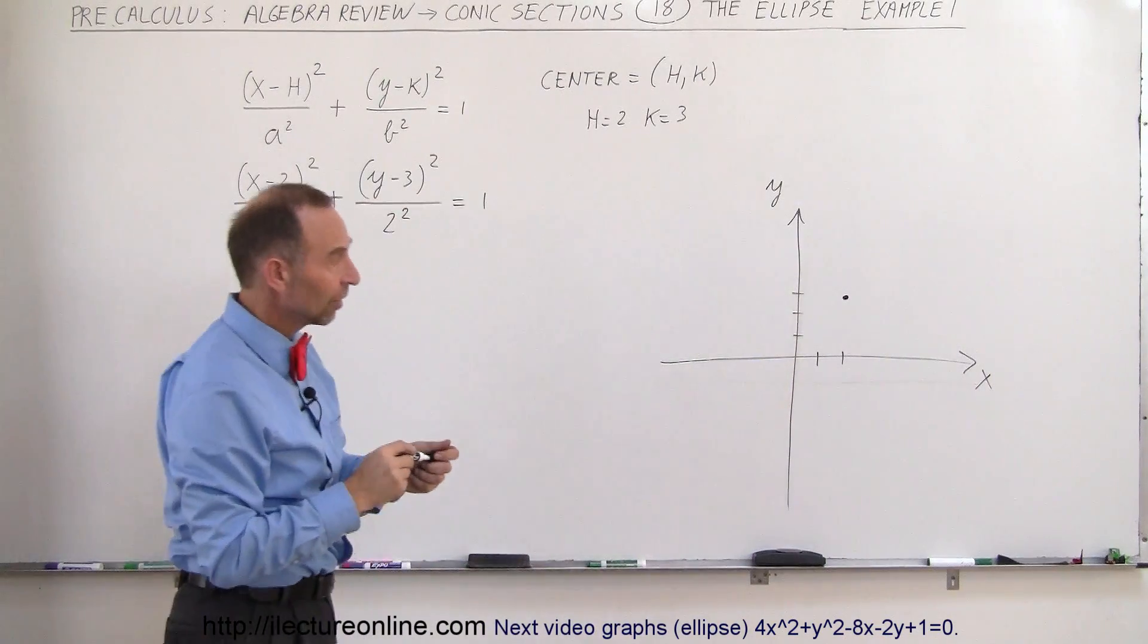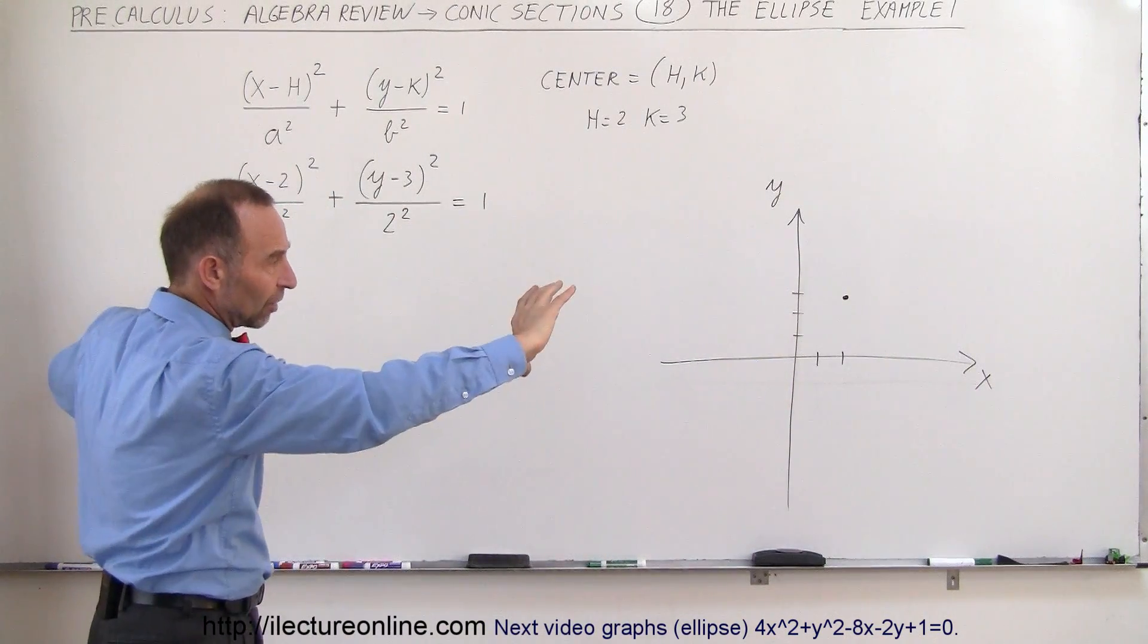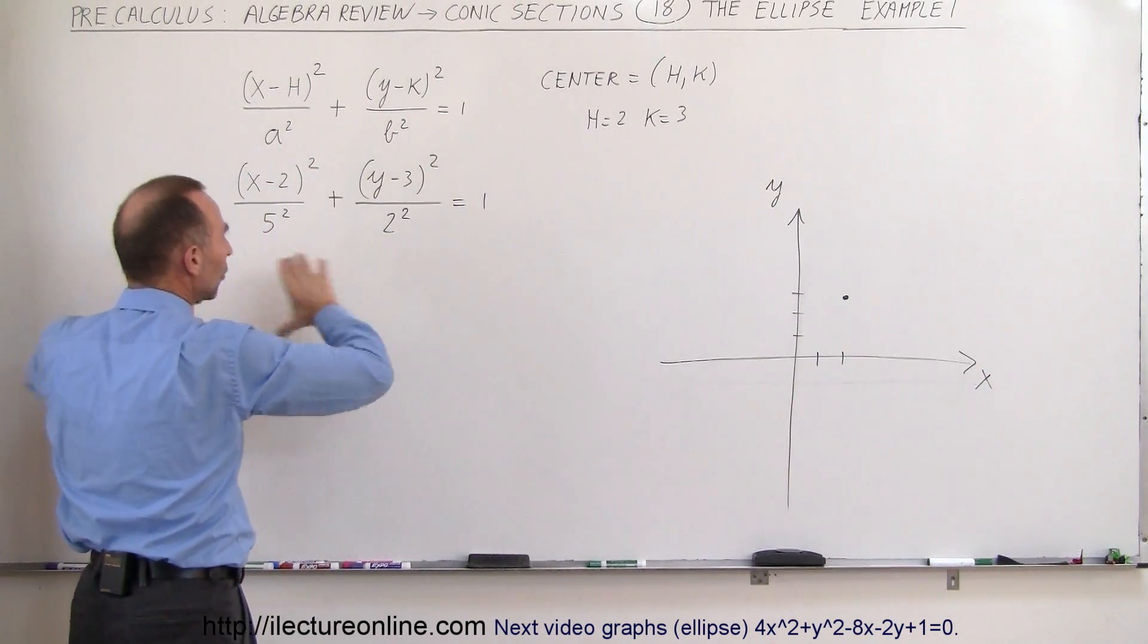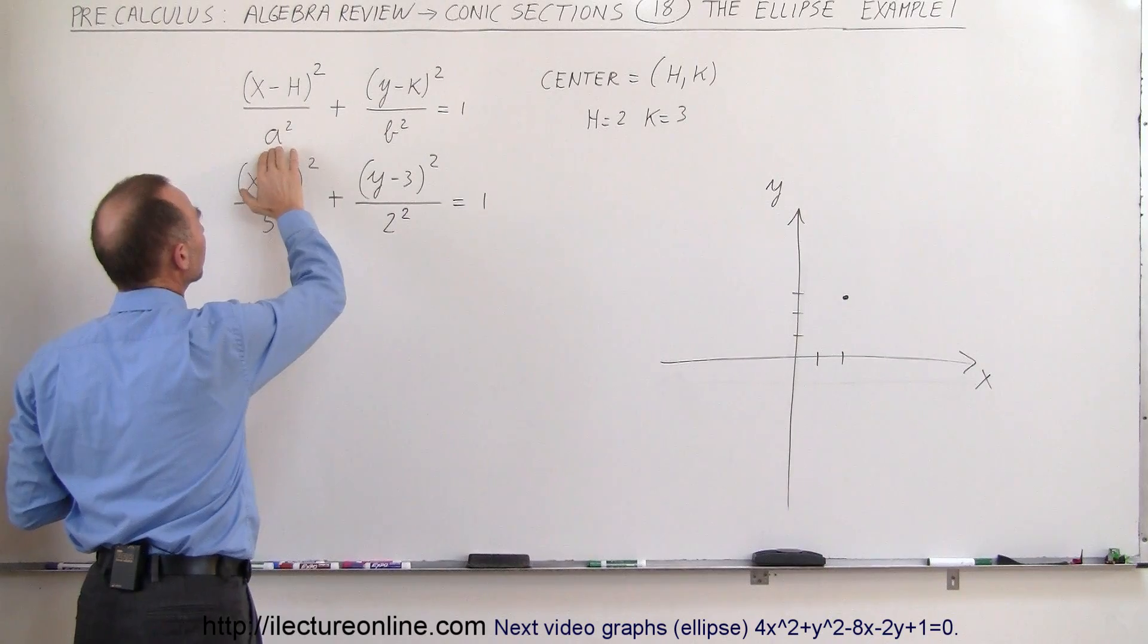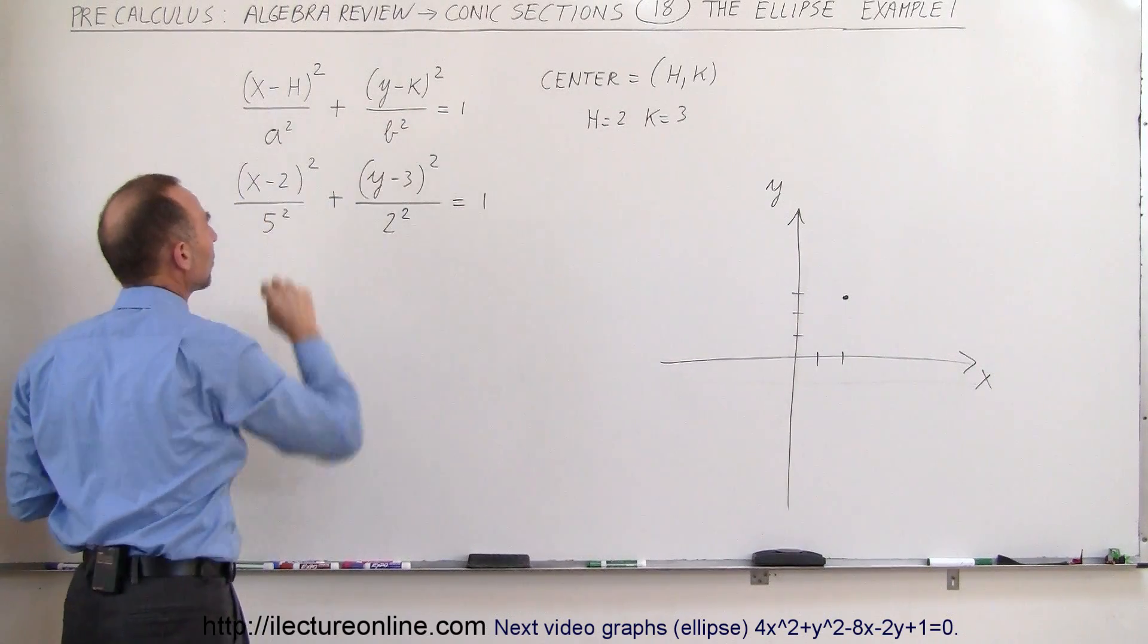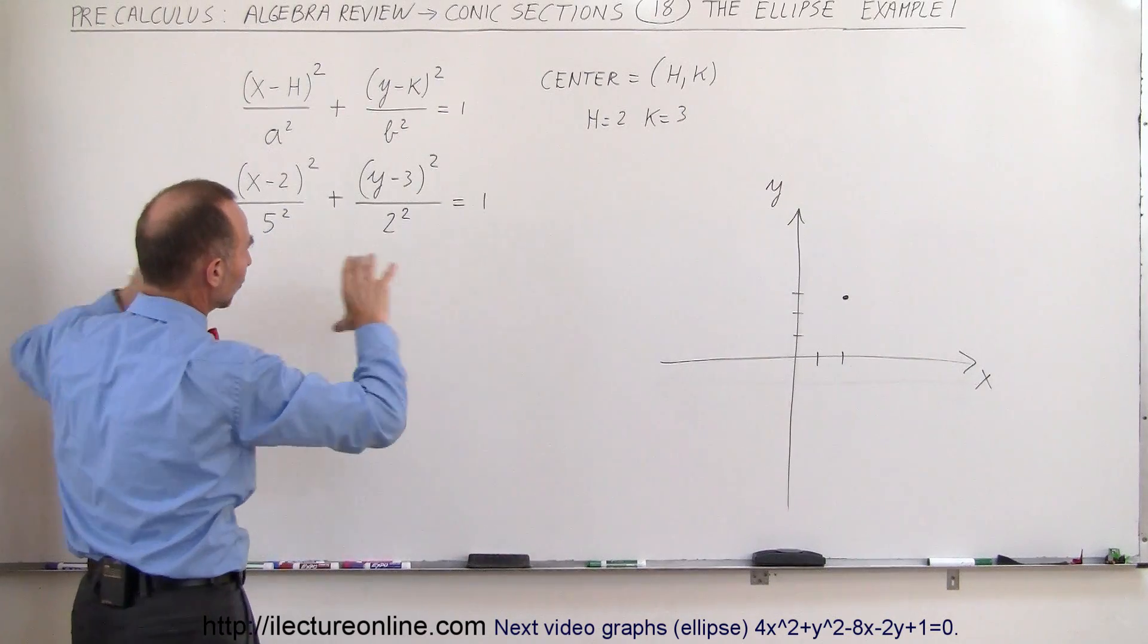Now, will the ellipse be stretched this way or stretched vertically? Well, that depends. If a is bigger than b, then it's horizontal. If a is smaller than b, or if this number in the denominator is smaller than this number right there, then it would be vertical. So it looks like it's going to be horizontal.